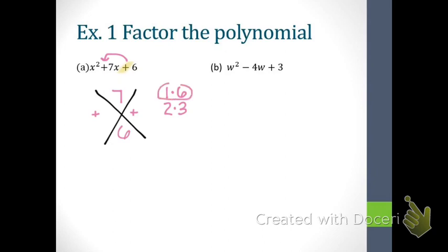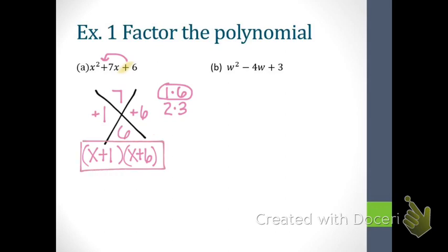Since the signs are the same it doesn't matter where we fill in the 1 and the 6. The only thing left is to write our final answer of two binomials. The only piece of the original problem we haven't used is x squared — how many X's are there if it's x squared? Two. We split them apart, putting one X in each binomial, then drop the plus 1 and plus 6. What if I had written x plus 6 times x plus 1? That's fine — as long as the right sign is with the right number, it doesn't matter which binomial it's in.